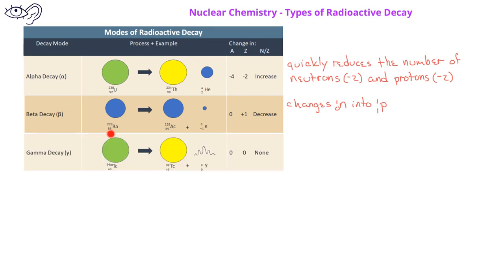A gamma ray can be emitted from an unstable nuclide. There is no change in the mass number or atomic number when a nuclide undergoes gamma ray emission. For example, technetium-99m undergoes gamma emission to produce technetium-99.